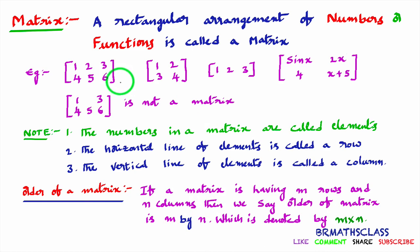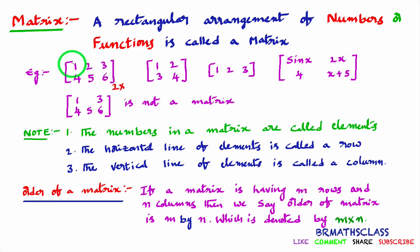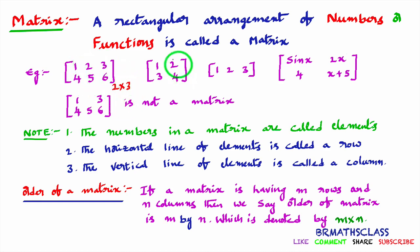For example, what is the order of this matrix? To find the order, identify how many rows there are: first row, second row — two rows. Then how many columns: first column, second column, third column — three columns. So the order of this matrix is two by three.